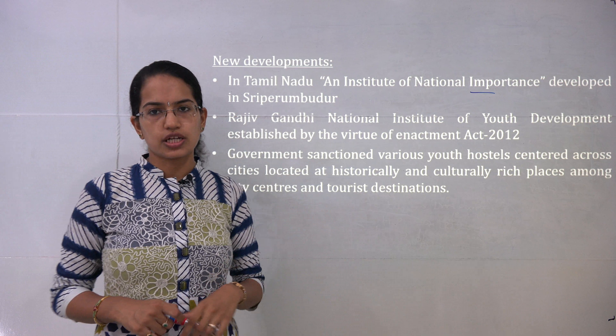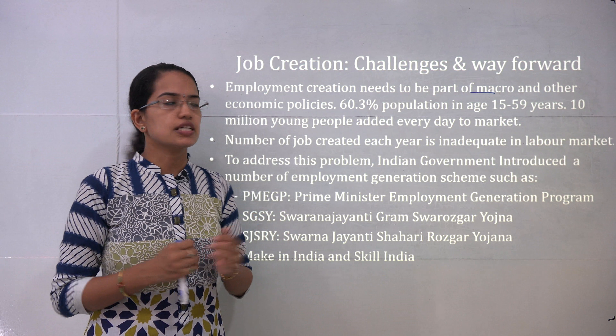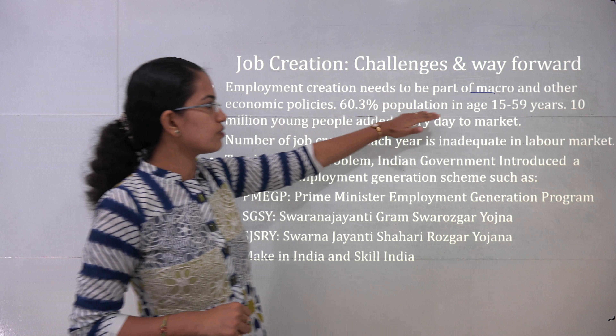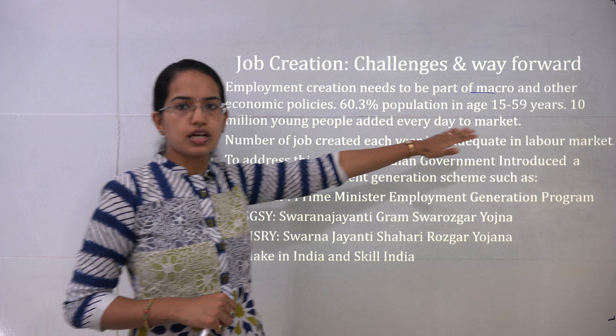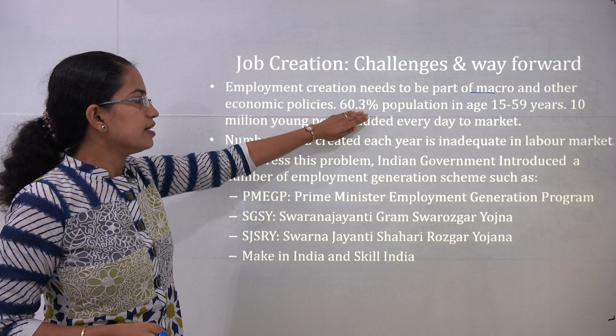Once youth are trained and educated, the next biggest question is job opportunities. With 60% of the population in the age group of 15 to 60 years, nearly 10 million young people are added every year. We need to create at least 10 million jobs every year to accommodate them. The number of jobs created is not at par with the labour market, and most jobs created are in the unskilled sector, so more skilled opportunities need to be developed.